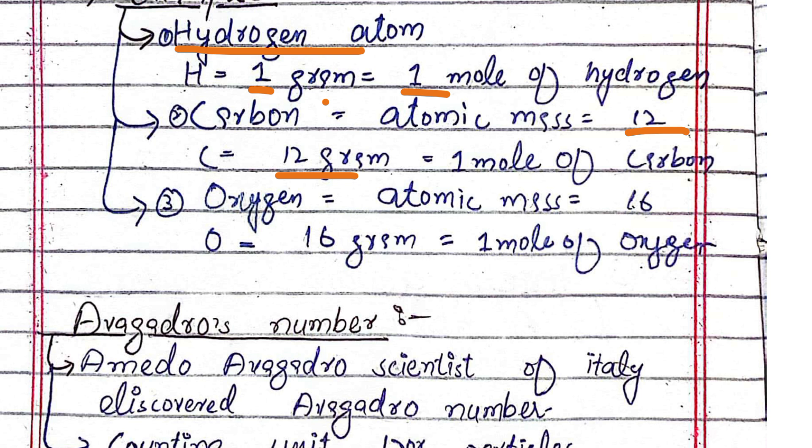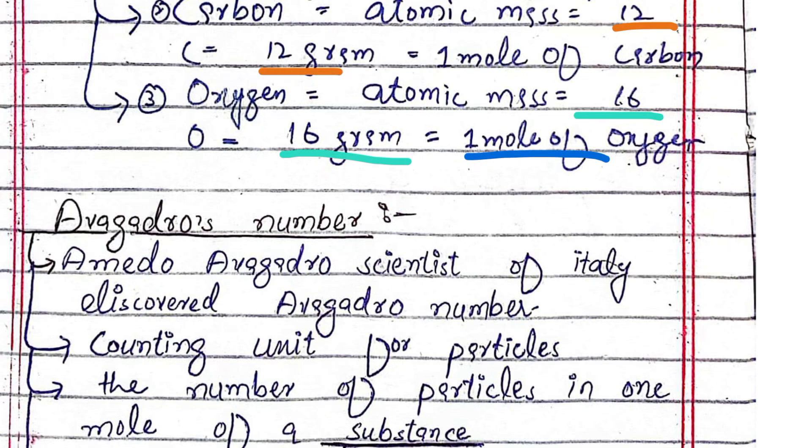For oxygen, the atomic mass is 16, so 16 grams is equal to 1 mole of oxygen.